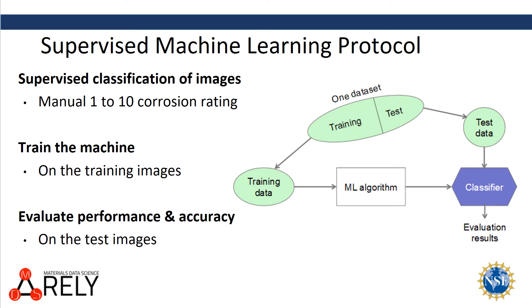Supervised machine learning protocol first requires manual classification of your data. This data is split into a training set and a testing set. The training set is used to train your machine learning algorithm, and the testing set is then used to quantify the accuracy of that algorithm.